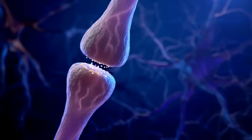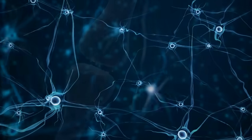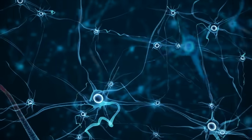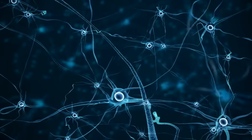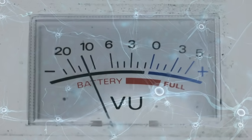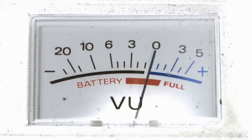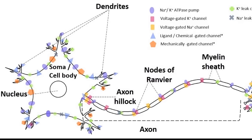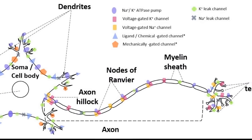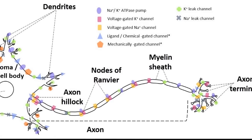But how exactly does a message travel down the axon? That's where resting potential and action potential come in. Resting potential is the state of a neuron when it is not sending a signal. Imagine it's like a battery that's fully charged but waiting to be used. The inside of the neuron is more negative than the outside, and this difference in electrical charge is what we call the resting potential.